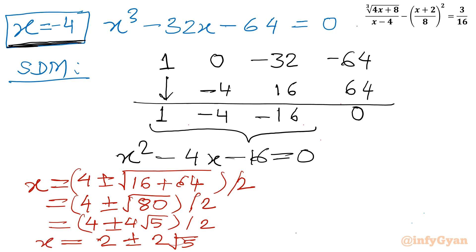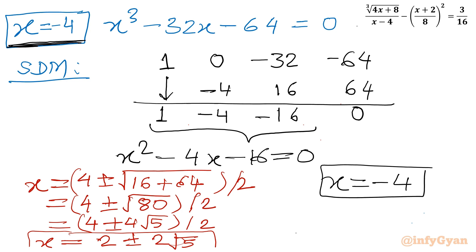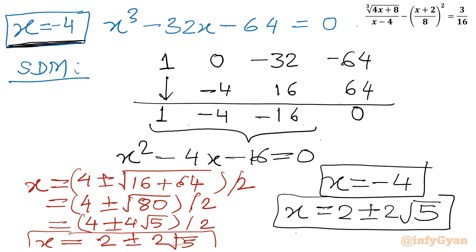These are our real values. We now have three solutions: x equals negative 4 as the first solution, and x equals 2 plus or minus 2√5 as the other two real solutions. Thank you so much for watching, friends. Do not forget to like, share, and subscribe.